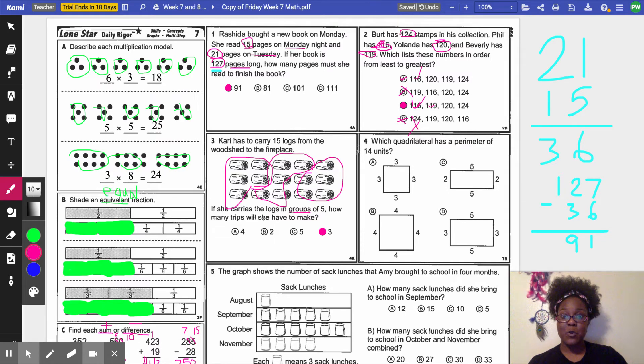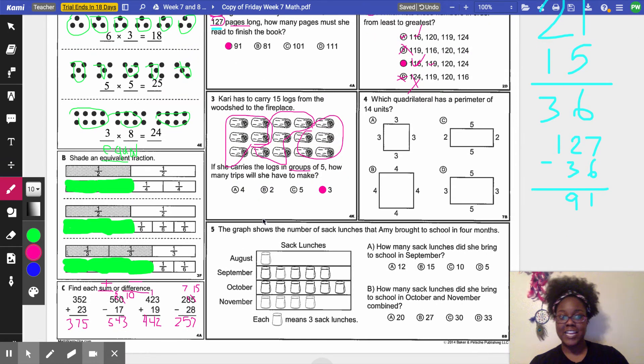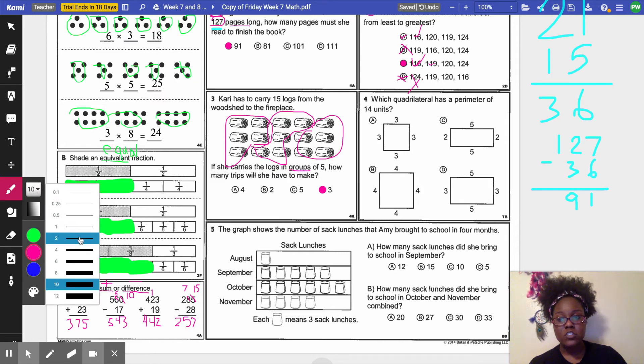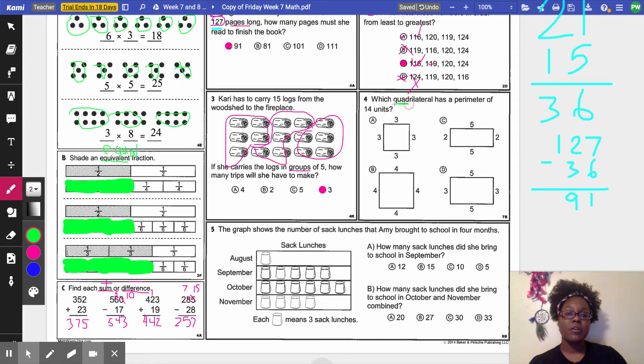All right, number four. I'm trying to go quicker because I know it's Friday. Y'all trying to get done. So number four. Which quadrilateral? First of all, whenever we see quadrilateral, we underline the quad and we put the number four, because we know quadrilaterals have four sides. So which quadrilateral has a perimeter? Whenever we see this word, we circle the T and we put a plus sign because we add with perimeter of 14 units. So we would ask the class, how do you find perimeter at all the side lengths? So we got to figure out which one's 14. Well, three plus three is six plus three more is nine plus three more is 12. So it is not A.